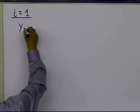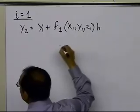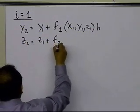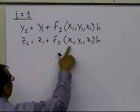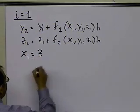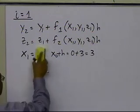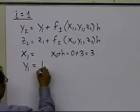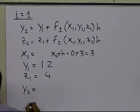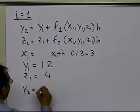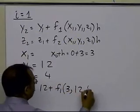For i equal to 1, y2 equals y1 plus f1(x1, y1, z1) times h, and z2 equals z1 plus f2(x1, y1, z1) times h. We know x1 is 3, y1 is 12, and z1 is 4 from the previous step. Since f1 is nothing but z, we get y2 equal to 12 plus f1(3, 12, 4) times h.